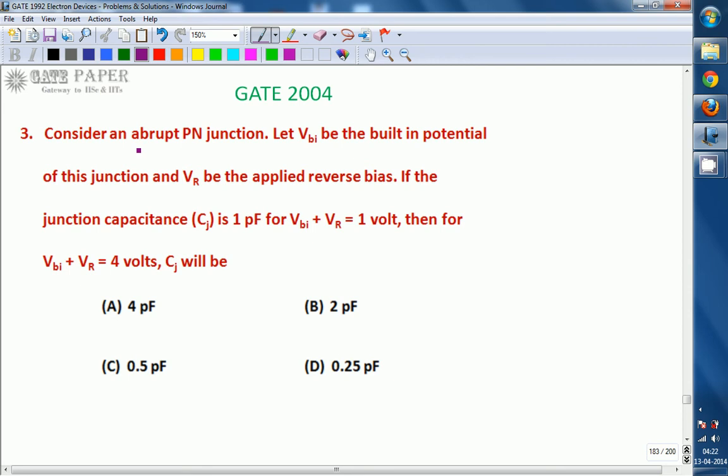Given abrupt PN junction and depletion capacitance or junction capacitance, the equation for this one is Cj equals epsilon A by D. D is W, the width of depletion region.